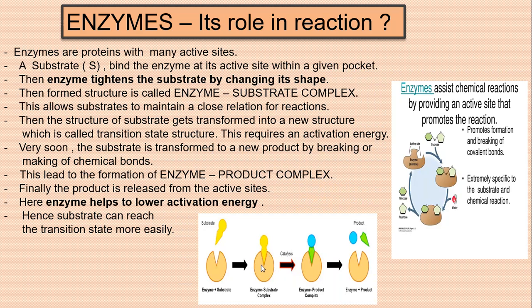When the enzyme-substrate complex forms, the substrate is held close enough to take part in the reaction. The enzyme and substrate remain in close relationship for the reaction to proceed. With the enzyme's help, a transformation occurs in the substrate — the substrate gets transformed into a new structure with the help of a certain amount of energy.